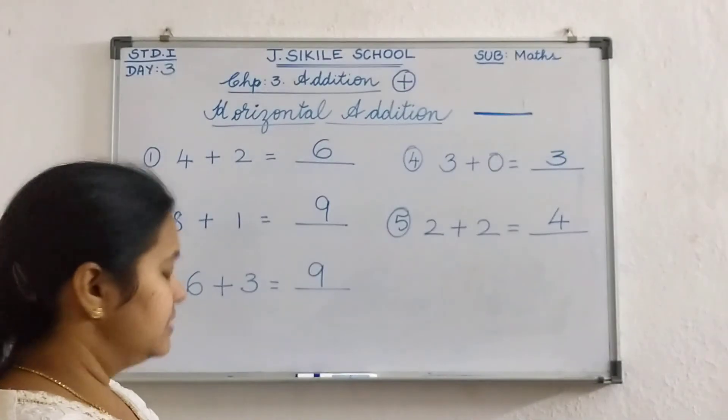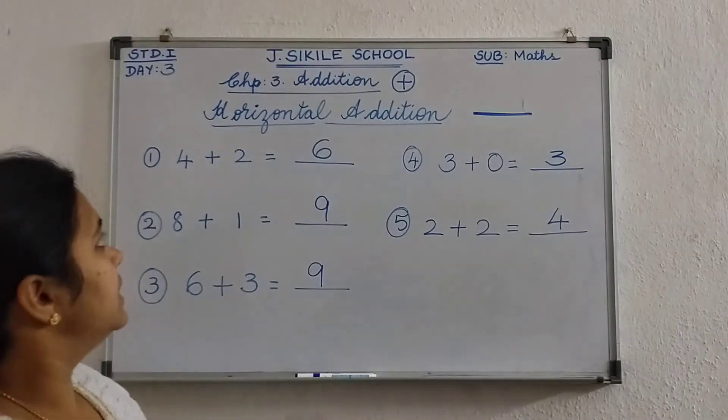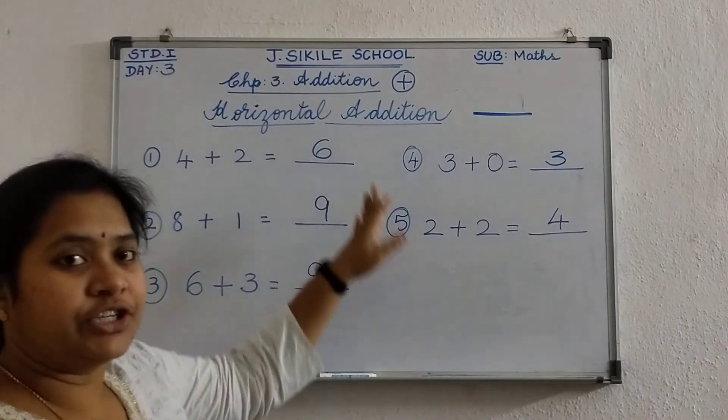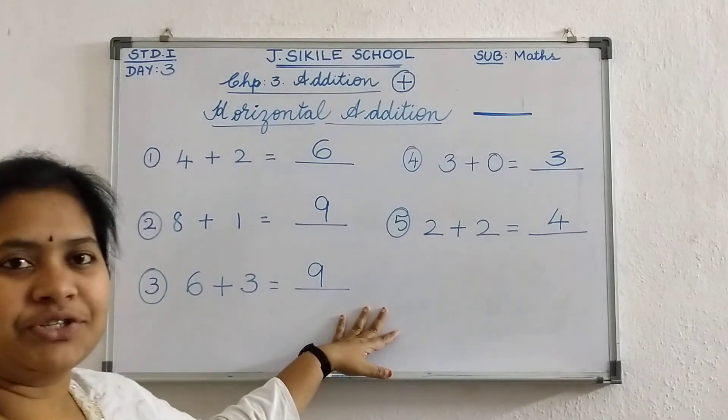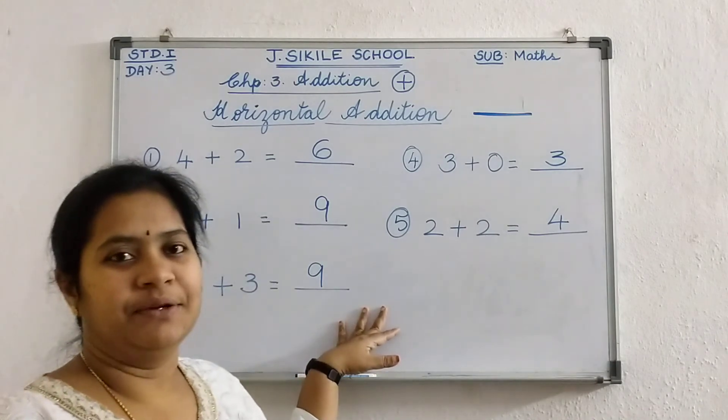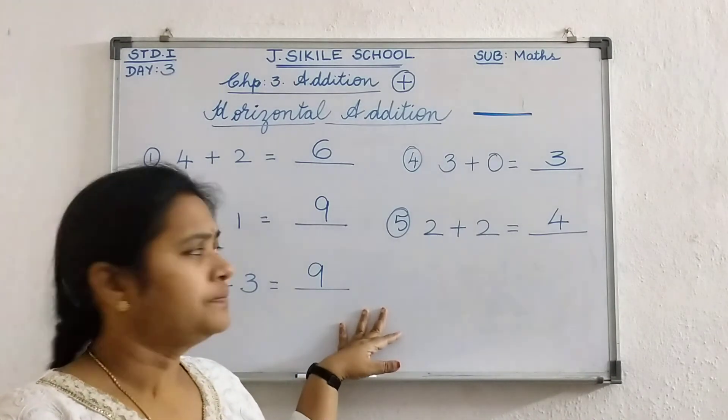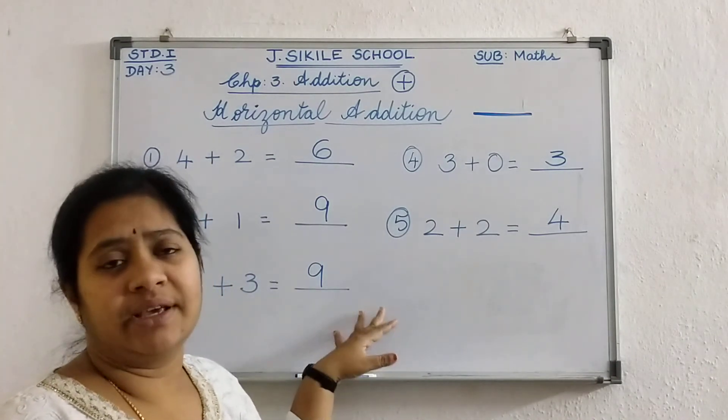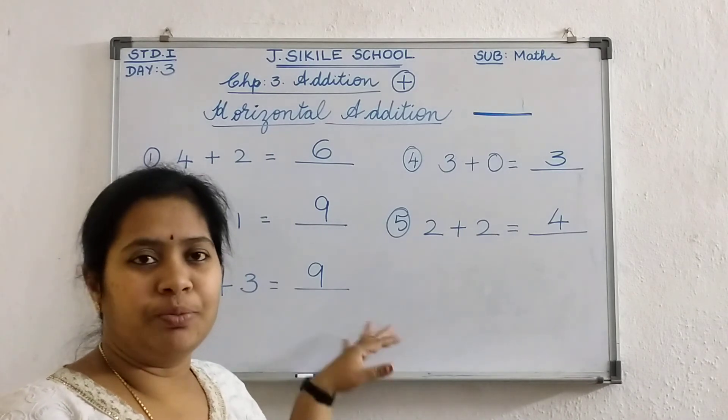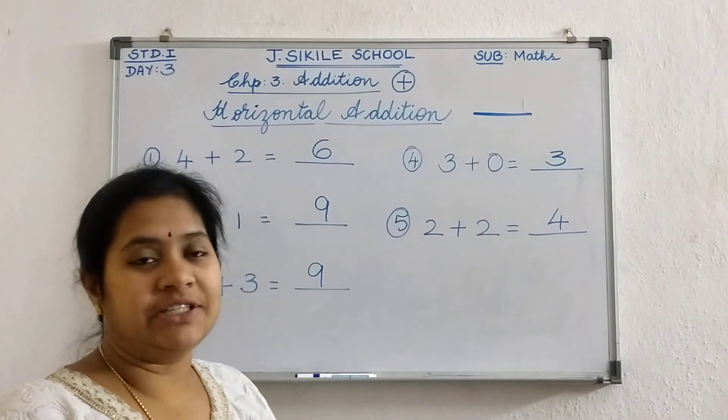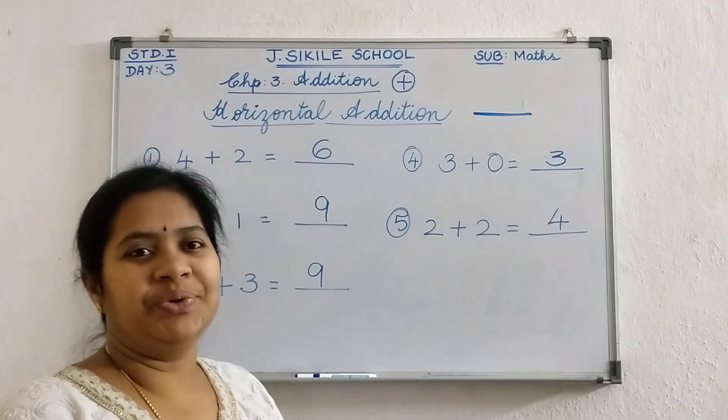Okay. Now have you understood children? This is called the horizontal addition. What addition this is called as? Horizontal addition. Okay children have you understood now how to do? It's very easy. Yes. Now I am going to post this horizontal addition notes in the Google classroom. You can copy down from there. Okay children write it very neatly. Thank you. Have a nice day.